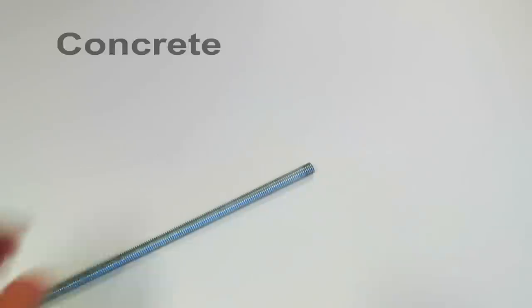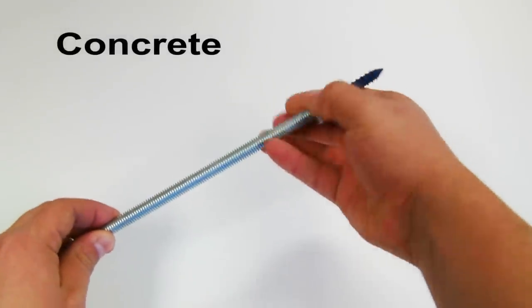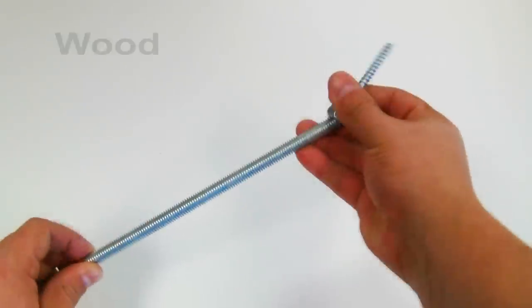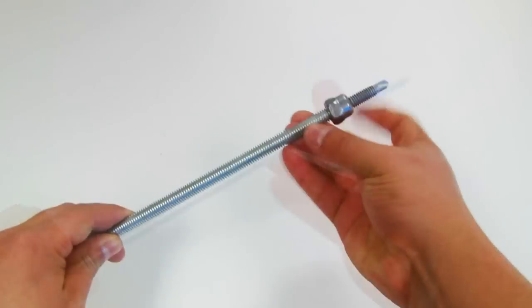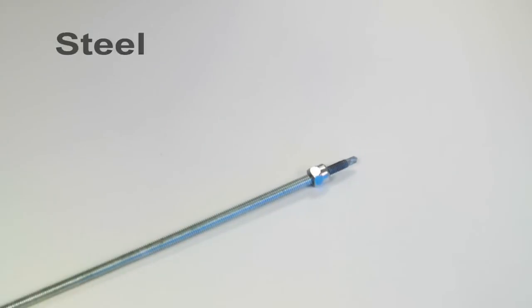Sixth, thread the screw onto the pre-cut rod. Use a screw for concrete, wood, or steel, depending on your application.